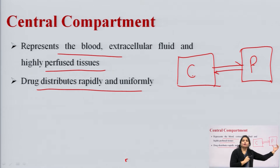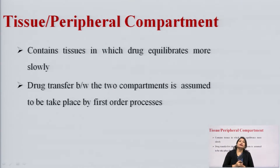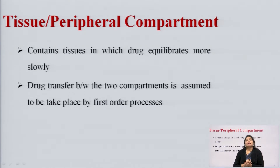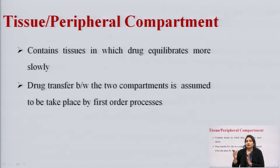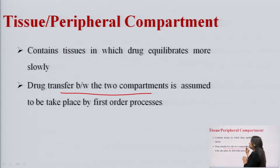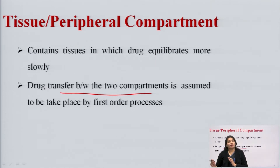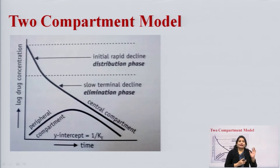The peripheral compartment is also known as the tissue compartment and contains tissues in which the drug equilibrates more slowly. In the central compartment, drug is rapidly distributed, but in the peripheral compartment, due to less blood flow and less vascularization, there is slow equilibration of the drug. Drug transfer between the two compartments occurs by a first-order rate process.